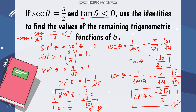We've now solved for all the different trigonometric functions of the given theta using our trigonometric identities. That's it for today — I hope you learned something about the two types of equations, conditional and identity, as well as our trigonometric identities. See you next time.